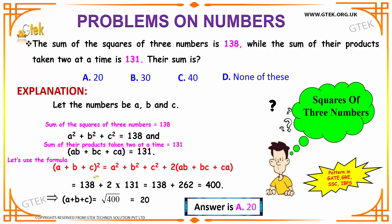So A plus B plus C the whole square is equal to 400. Hence, A plus B plus C will be nothing but square root of 400, which is equal to 20. Hence, your answer is option A, 20.